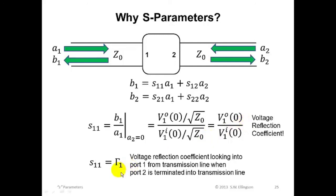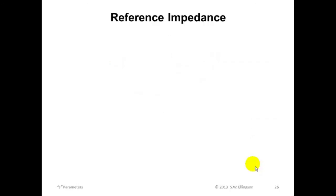So we'll give this a special name. We'll call S11 gamma sub 1. And what we mean by gamma sub 1 in this course is the voltage reflection coefficient looking into port 1 from a transmission line when port 2 is terminated into a transmission line. And both transmission lines have equal characteristic impedance, equal to Z0. That is the reference impedance for which the S-parameters are defined.